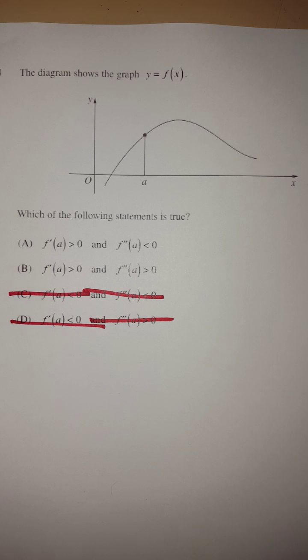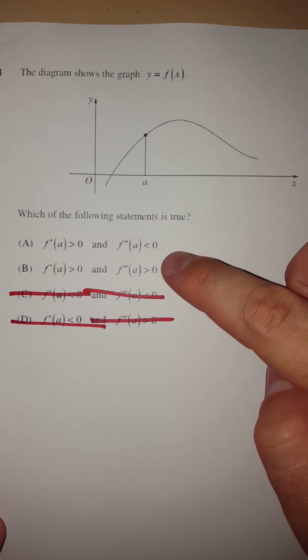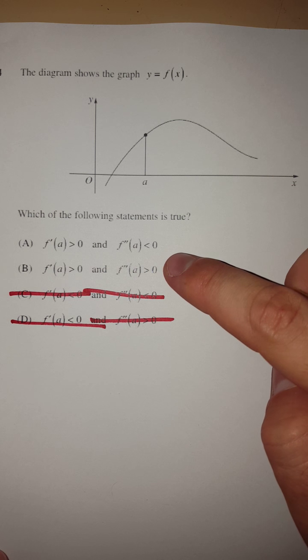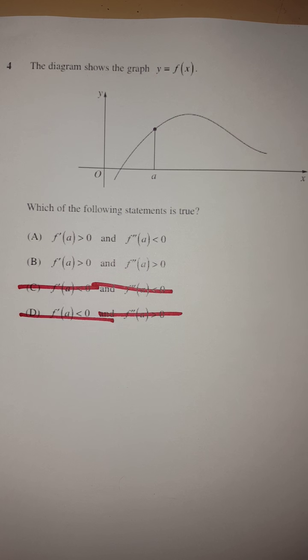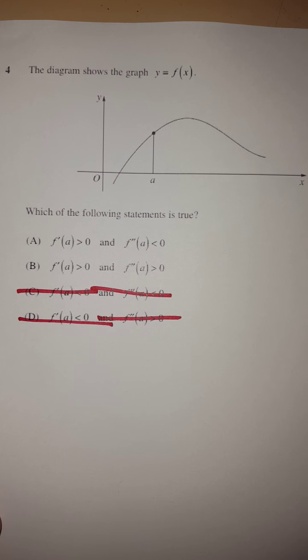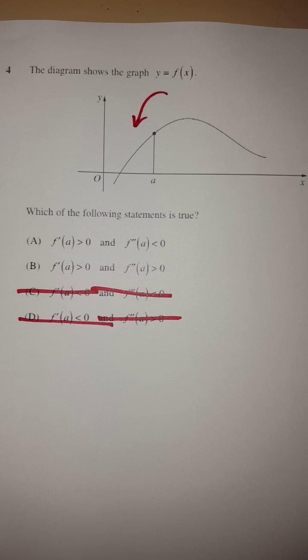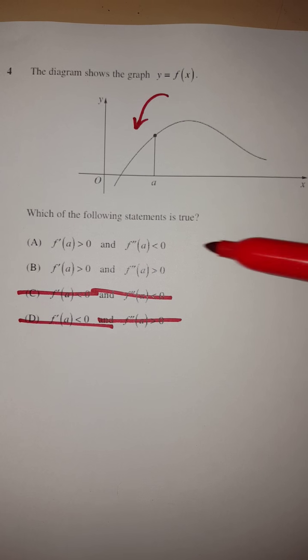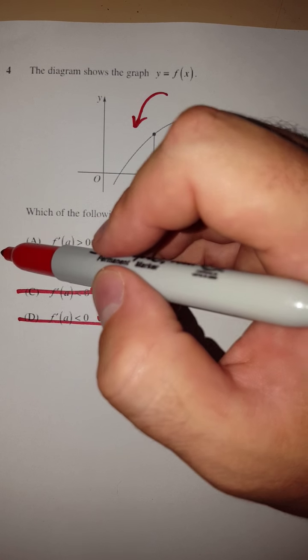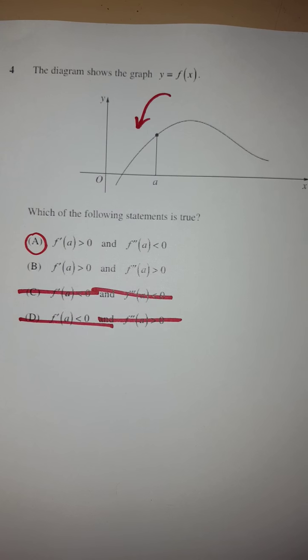because we need that positive first derivative. And now we just need to determine whether or not it's going to have a positive or negative second derivative. And that's where we talk about concavity. I think it's fairly clear to see as well that at this point here, the curve is that shape, which is a concave down graph, which means that it requires a negative second derivative. So clearly A is now the correct answer to that question.